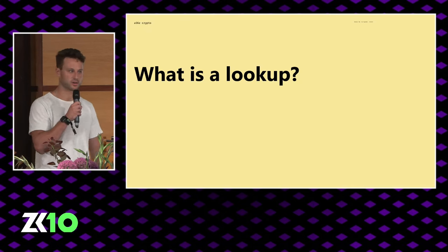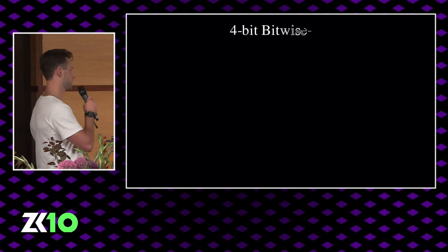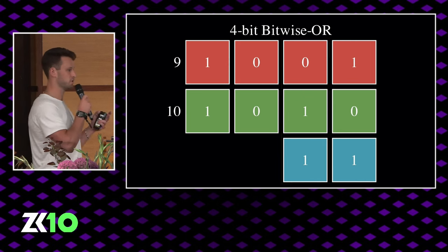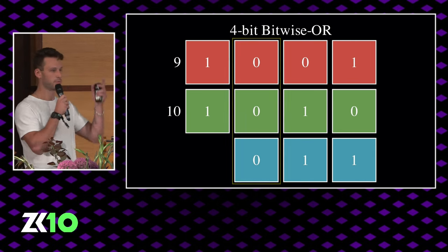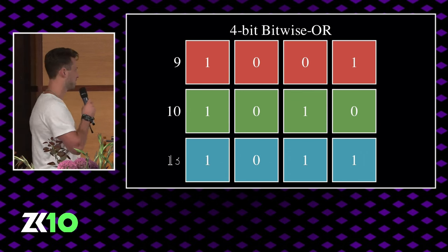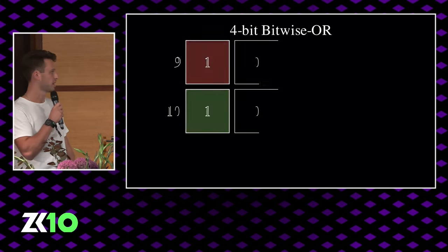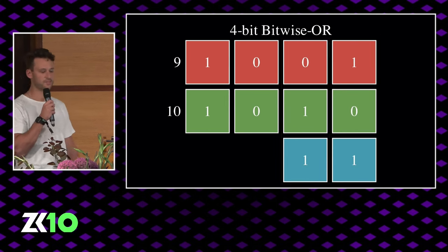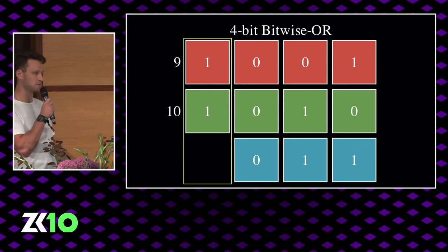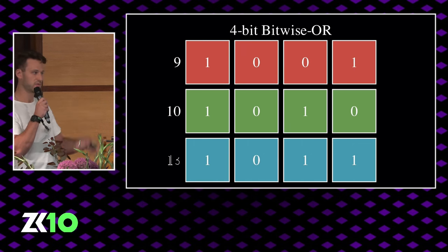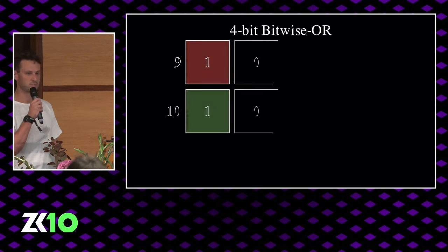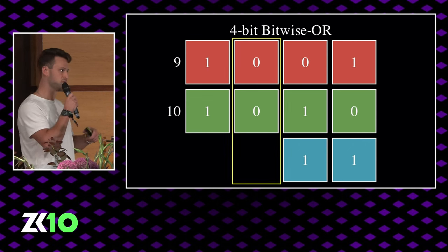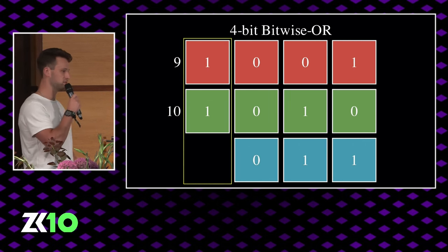So first, background — what are lookups? This is a 4-bit bitwise OR operation. Bitwise operations are ones where you take integers, represent them as bit vectors, and then operate over each pair of bits sequentially. These are quite simple on silicon — CPUs are designed to do this at the speed of light. But unfortunately, they represent a lot of complexity within SNARKs, because we have to take our integers, our field elements, represent them as binary field elements which can be 64 bits or even 256 bits, decompose them, operate over each, and then recompose them. And this is very expensive.